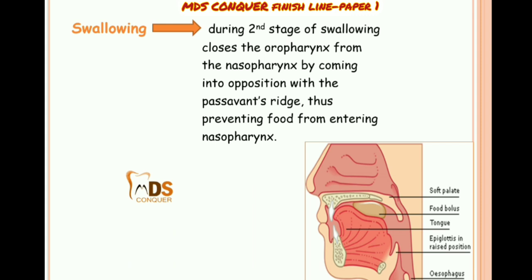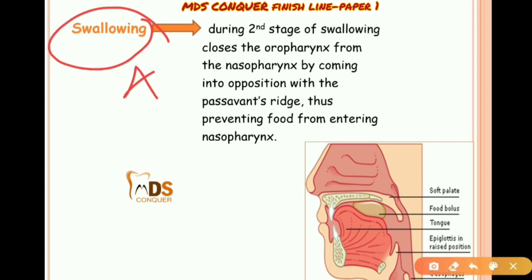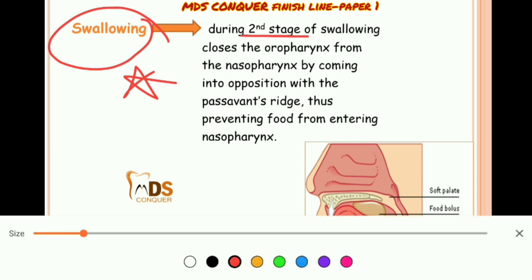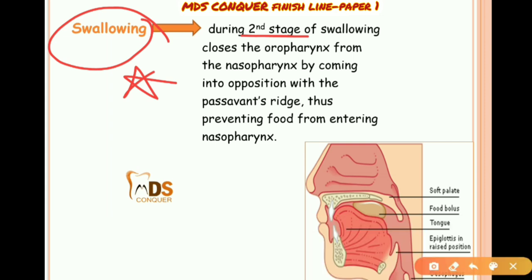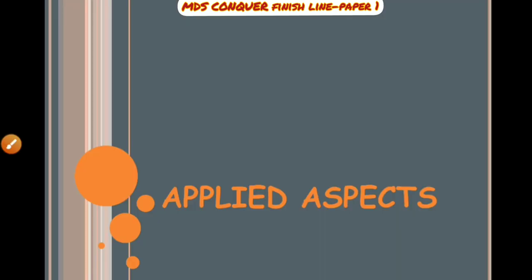These muscles also have a very important role in swallowing, particularly in the second stage of swallowing. This completes the anatomical structure, development, and muscles of the soft palate.